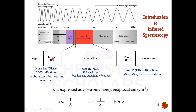In IR there are three regions: near IR, mid IR, and far IR. The region generally used for studying is the mid IR region, which is from 400 cm⁻¹ to 4000 cm⁻¹. Measurements are taken as wave numbers. The far IR region is from 0 to 400 cm⁻¹, closer to microwave, and the near IR region is from 4000 to 12,500 cm⁻¹.